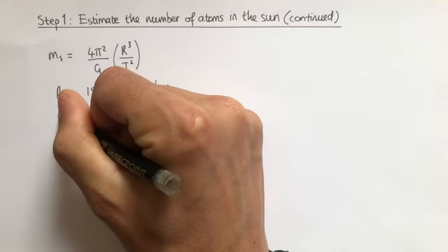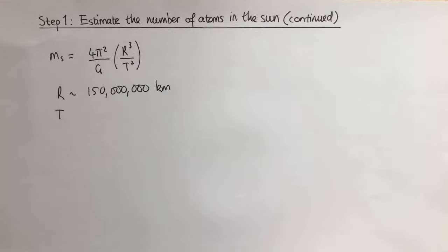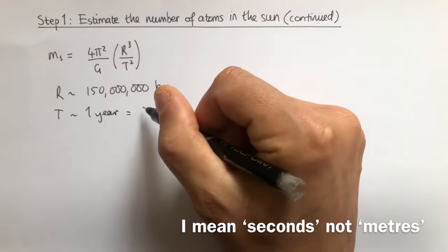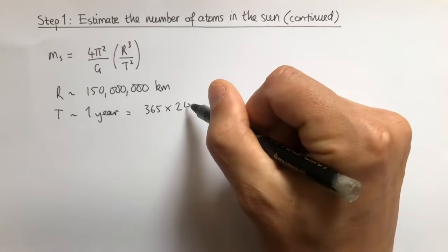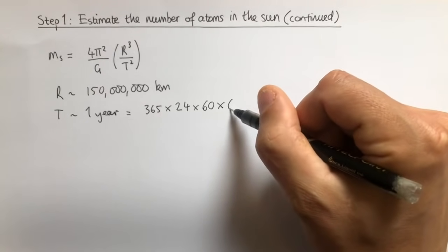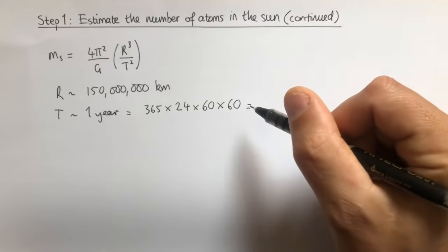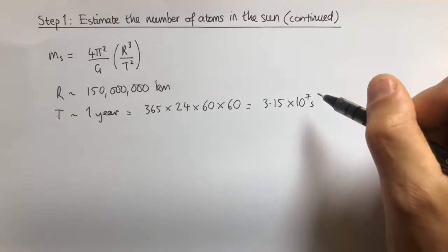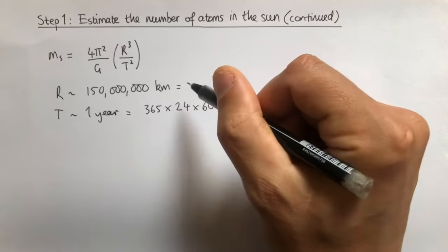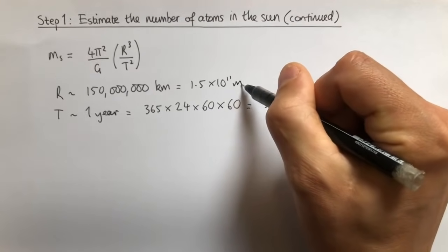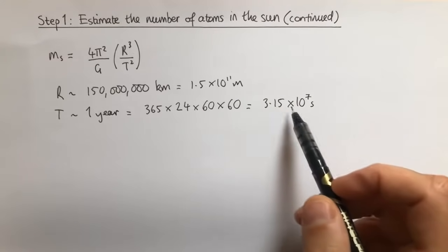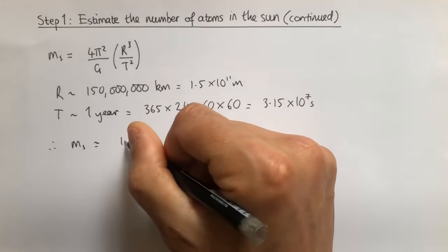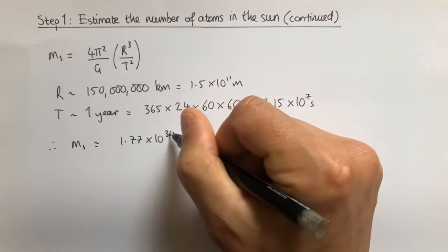The time period — the time it takes for the Earth to complete one orbit — is one year, which we need to express in seconds: 365 days times 24 hours times 60 minutes times 60 seconds, giving approximately 3.15×10⁷ seconds. The radius expressed in metres is about 1.5×10¹¹ metres. Substituting these values into the equation, we find that the mass of the Sun is approximately equal to 1.77×10³⁰ kilograms.